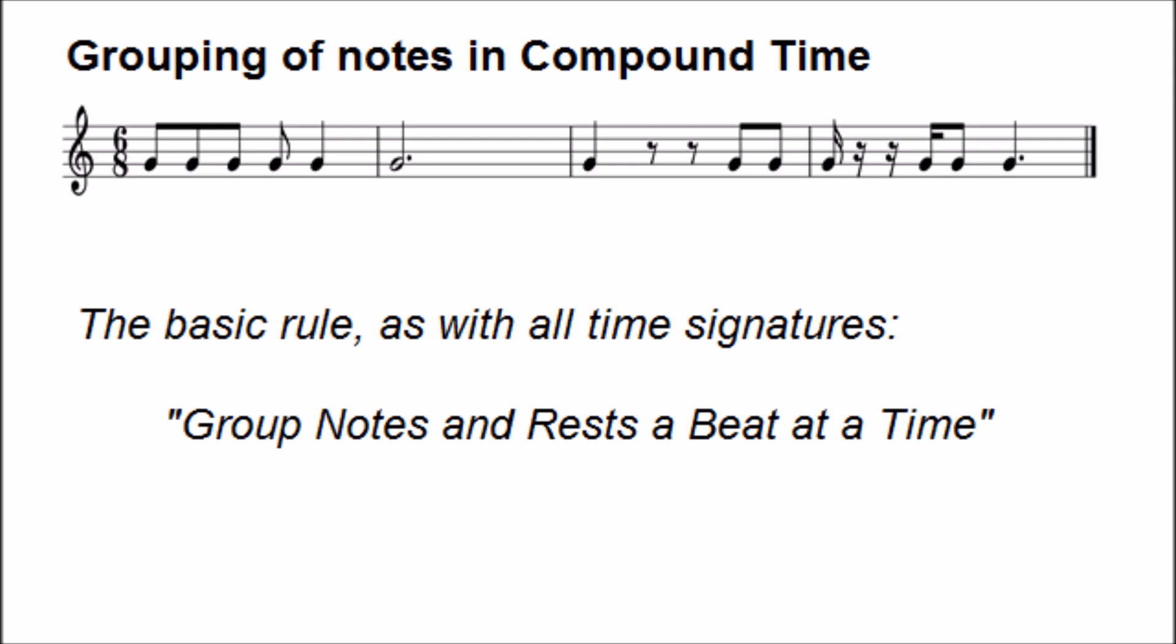Let's consider these four bars. In the first bar, notice how the fourth quaver is not joined to the other three. That's because it is part of a different beat. A beat in compound time is three quavers. The fourth quaver is another beat.